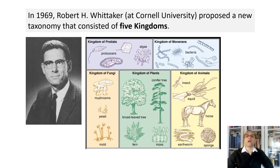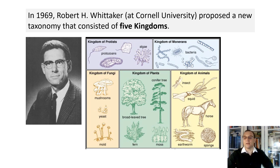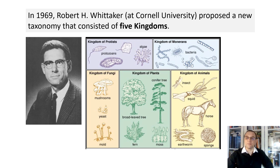Now we will look at the large taxonomic groups — one type of which you are already familiar with: kingdoms. Carl Linnaeus proposed dividing all living things into two kingdoms, Plantae and Animalia. However, living things are too diverse to be put into just two kingdoms. In 1969, Robert Whittaker proposed a new taxonomy consisting of five kingdoms: Kingdom Protista, Kingdom Monera, Kingdom Fungi, Kingdom Plantae, and Kingdom Animalia.